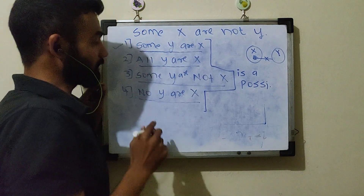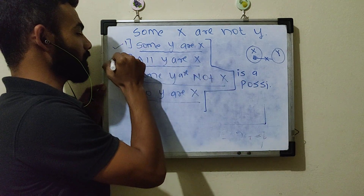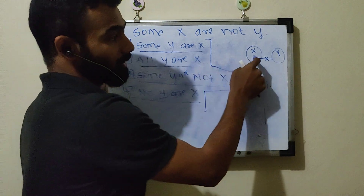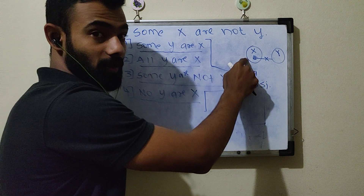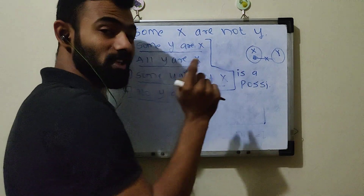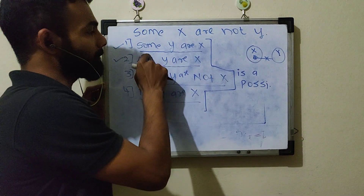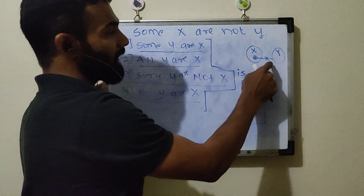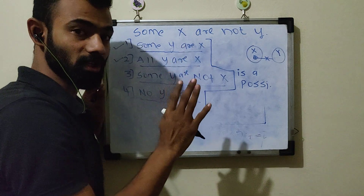So what will this conclusion be? Correct. 'All Y are X' is a possibility — so this conclusion is also correct. 'Some Y are X' is a possibility — correct. And again, 'Some Y are X' is a possibility.